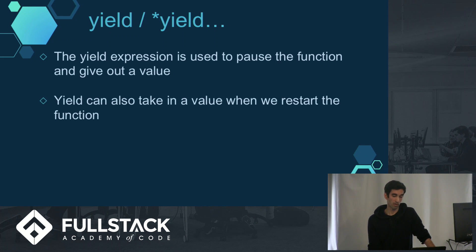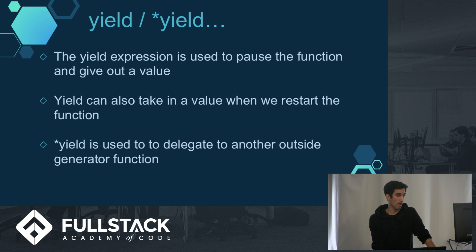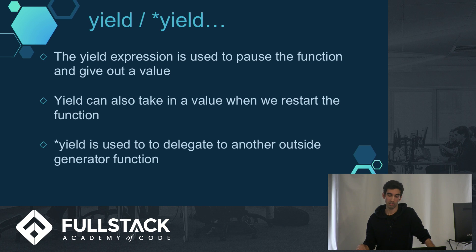The next time we run the function, we can also pass in a value to that yield expression. You can also use the asterisk with the yield, which basically means that it will pause and then delegate its actions to another generator function, which will complete and then come back to the original function.